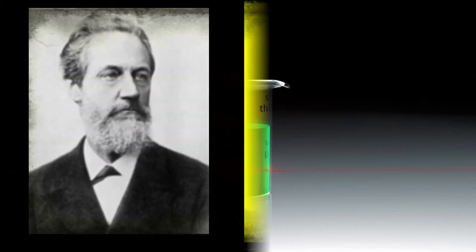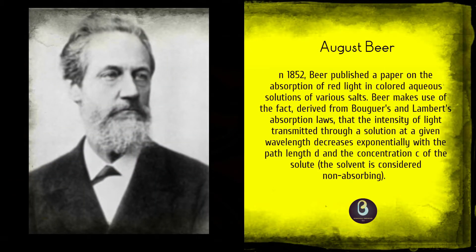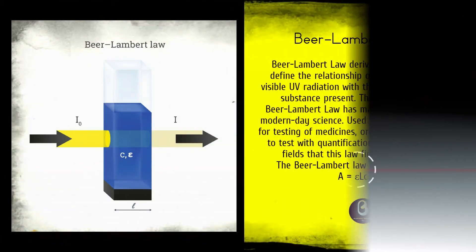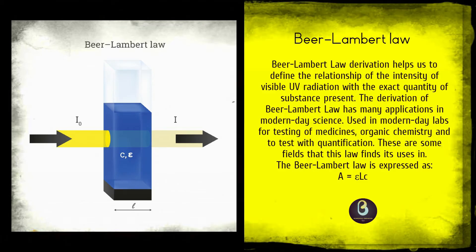Much later, August Beer discovered another attenuation relation in 1852. Beer's law stated that the transmittance of a solution remains constant if the product of concentration and path length stays constant.